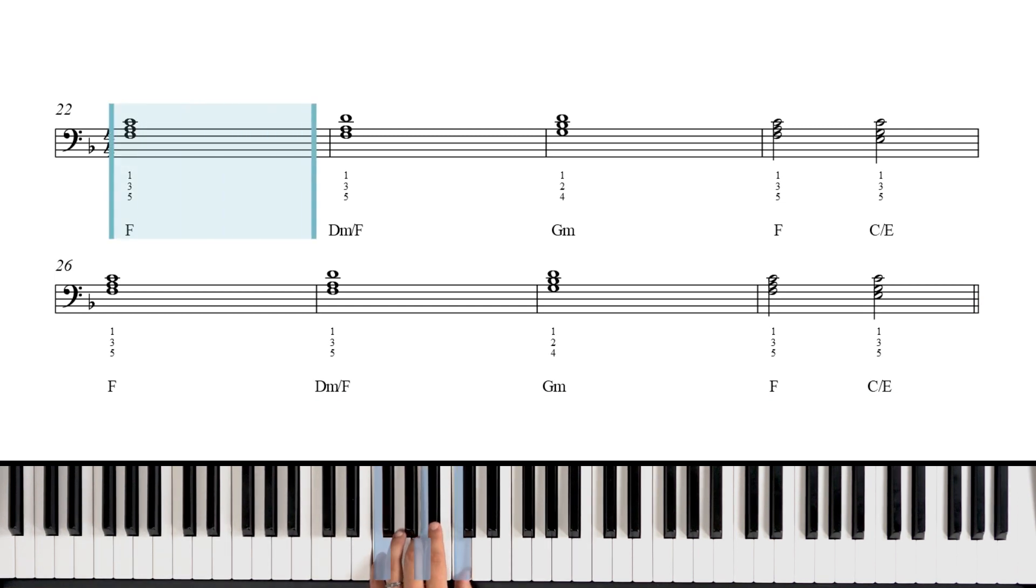We're going to start with F major in root position. One, two, three, four. That's a whole note. Next chord, we're only moving our thumb. The other two notes stay the same, so we're going to move up from C to D. Now we're in measure two. We have D minor over F, and that means we're in a D minor inversion where the F note is the lowest note of the voicing. Here's root position D minor. This is D minor over F. Third measure, we have G minor in root position. Notice now we're keeping our thumb the same. Alright, now in measure four, we go back to our F chord, but just for two counts, and then we go down to our C over E. It's a C major chord in first inversion.